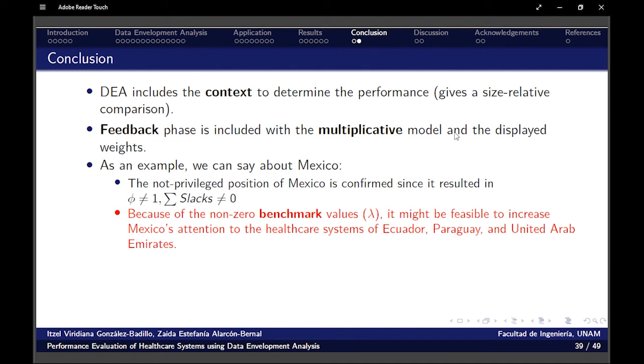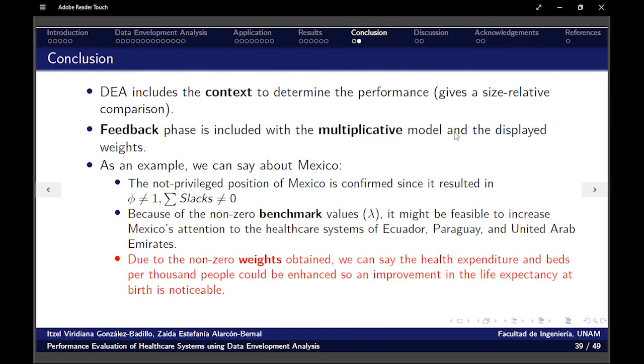Because of the non-zero benchmark values, the lambdas, it might be feasible to increase Mexico's attention to the healthcare systems of Ecuador, Paraguay, and United Arab Emirates. And due to the non-zero weights obtained, we can say that health expenditure and beds per thousand people could be enhanced. And that improvement would be seen in the life expectancy at birth in a very noticeable way.